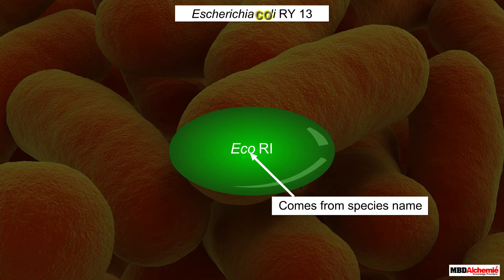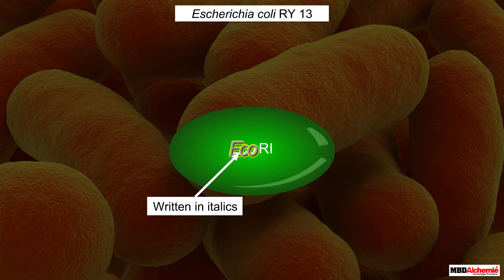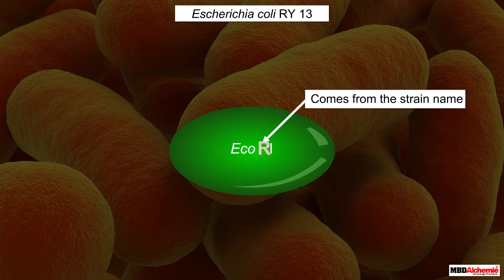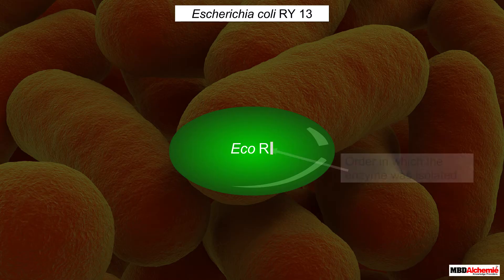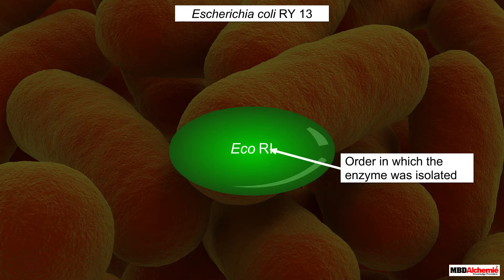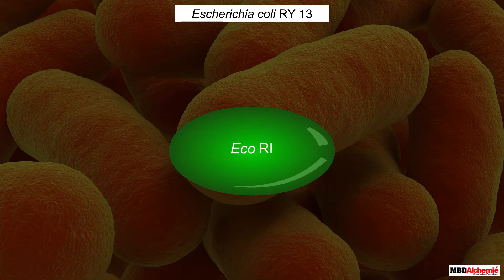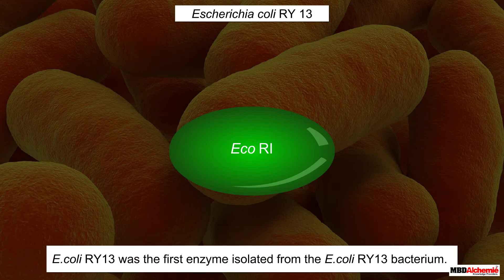The first two letters of the species name are taken as the second and third letters of the enzyme name — as in the example, CO comes from coli, written in small letters. The three letters are written in italics. The first letter of the strain makes the fourth letter of the enzyme name, written in capital — as in the example, R comes from strain RY13. The Roman numeral at the end indicates the order in which the enzyme was isolated from the strain; in the example, I signifies it was the first enzyme isolated from E. coli RY13.